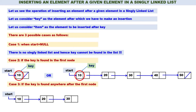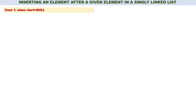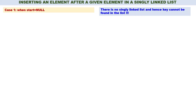You should be very clear with these three cases because the whole logic depends on them. Let us consider this linked list — key may be found at 20, 30, 40, or 50. Now, first case: when start is equal to null, this is the easiest case. There is no singly linked list and hence key cannot be found in the list.